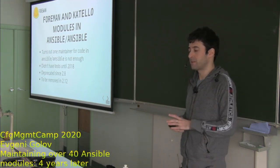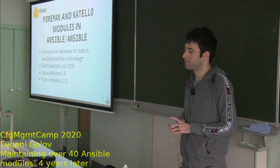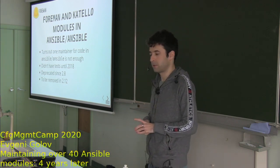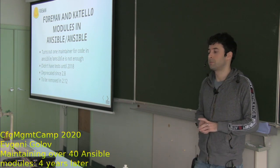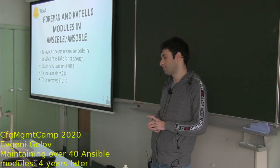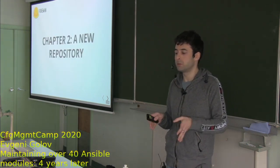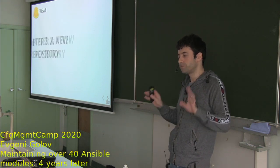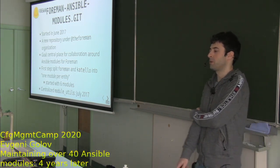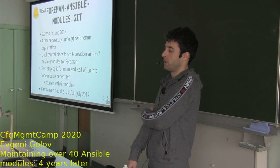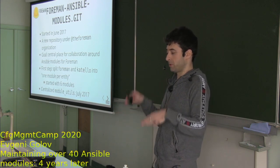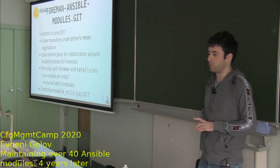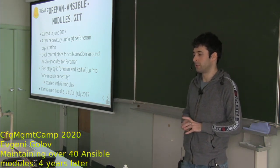It wasn't that good. We realized that at some point we didn't even have tests until 2018. This is deprecated and will be removed in Ansible 12—really, nobody should be using it today. We realized that rather quickly and thought, let's start a new repository under our own control. Fast forward to June 2017: we started a new repository, part of the Foreman organization on GitHub. The goal was a central place for everybody to collaborate—mostly Red Hat and ATIX, the two companies most interested in automation around Foreman and Katello.